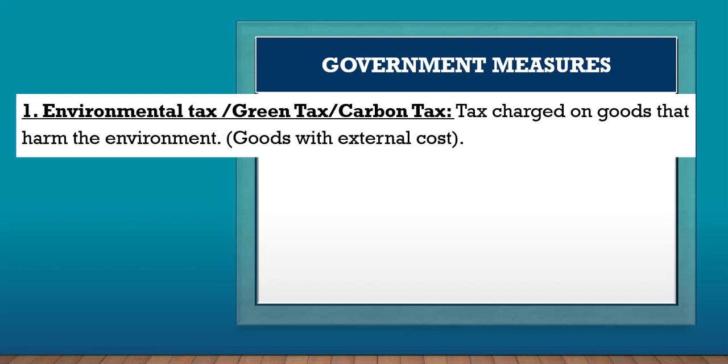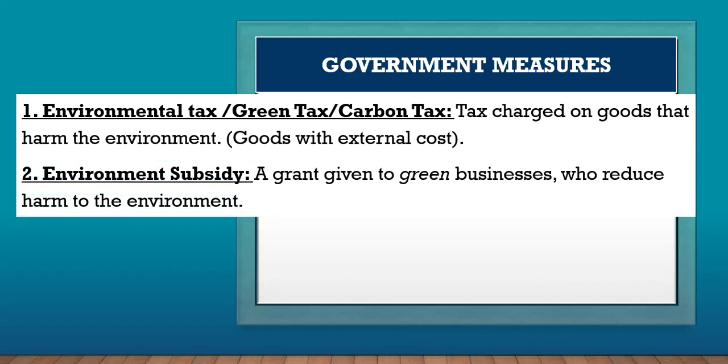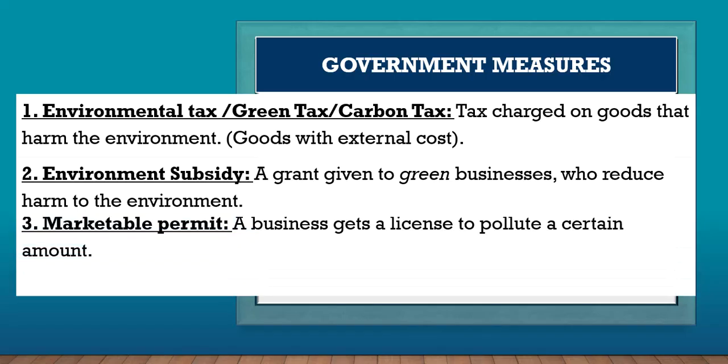What are some government interventions to control pollution or emissions? The government can introduce an environmental tax, also called a green tax or carbon tax — a tax charged on goods that harm the environment, goods with a negative externality. An environmental subsidy is the opposite — a grant given to green businesses, those that are environmentally friendly.